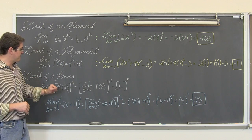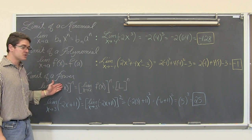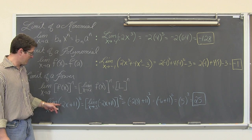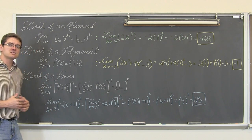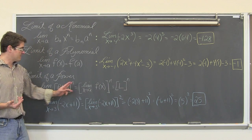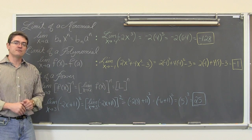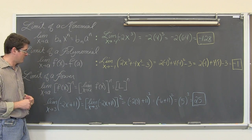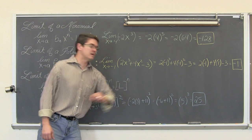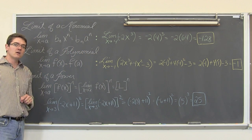Limit of a power: the limit as x approaches a of [f(x)]^n — you are allowed to take the limit of the inside function first, and then apply the power of n. For example, the limit as x approaches three of (negative 2x plus 11)² — that whole binomial squared. Let the power of two float out, find the limit as x approaches three of negative 2x plus eleven. That is a polynomial, so plug in three: negative six plus eleven equals five. Then apply the original power of two: five squared is 25.